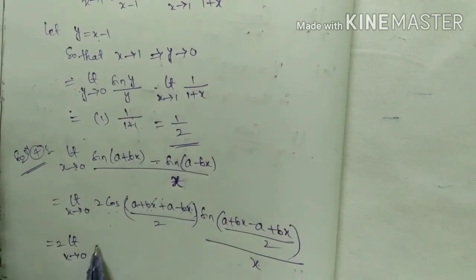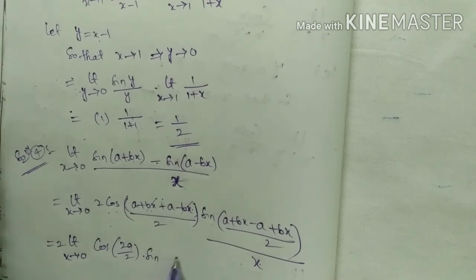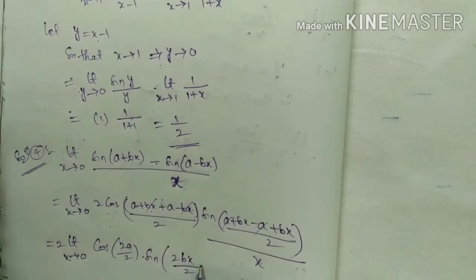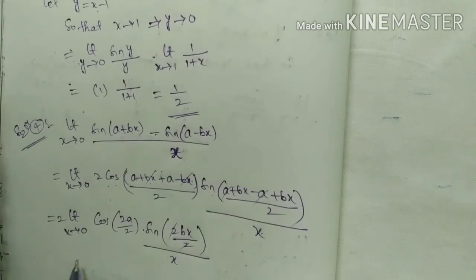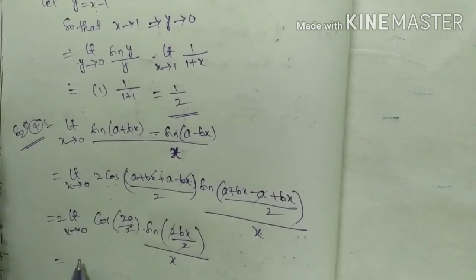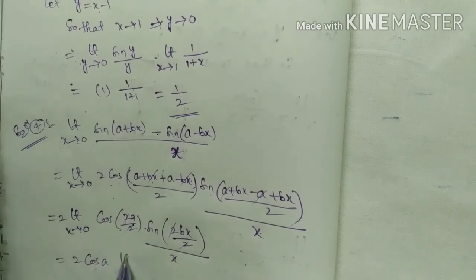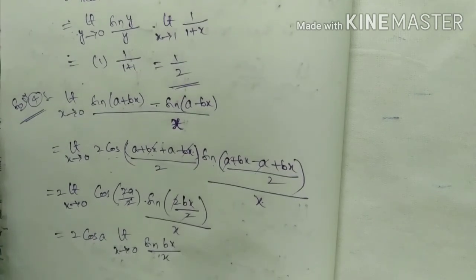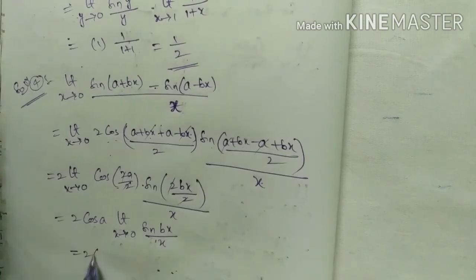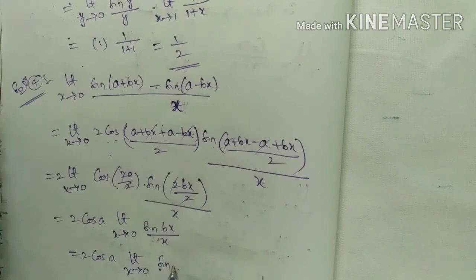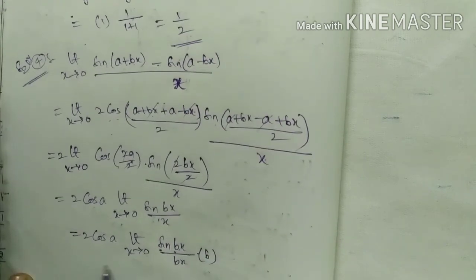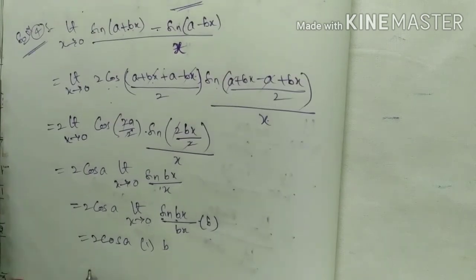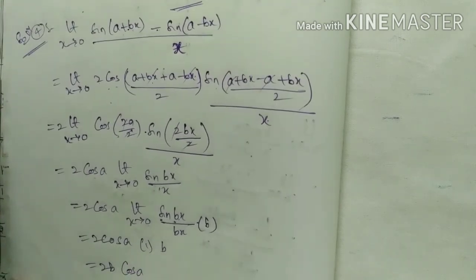Simplifying: (a + bx + a − bx)/2 = a, and (a + bx − a + bx)/2 = bx. This gives limit x tends to 0 of 2 cos(a) × sin(bx) / x. Since sin(bx)/x = sin(bx)/(bx) × b, applying the standard limit gives 2 cos(a) × 1 × b = 2b cos a.